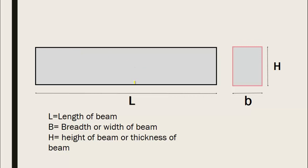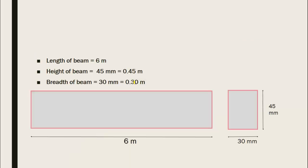Now to understand this properly, let's do a practical problem. Here you can see a simple beam is given whose length is 6 meters. The height of the beam is 45 millimeters and the width is 30 millimeters. Now to make the units consistent, change height and breadth from millimeters to meters by dividing by 1000. So we get height of 0.45 meters and breadth of 0.30 meters.